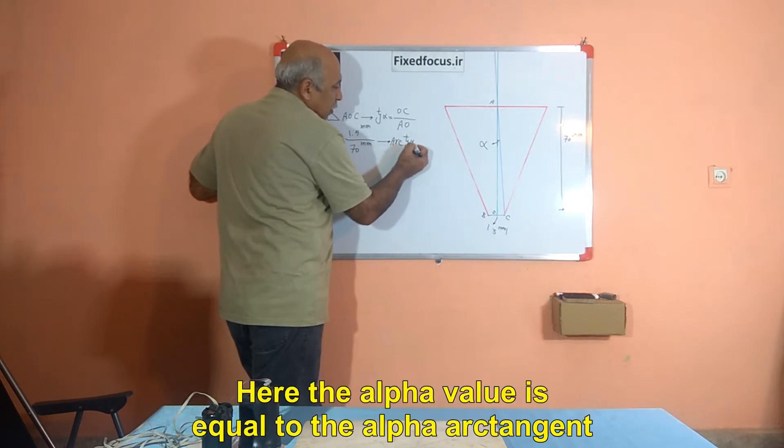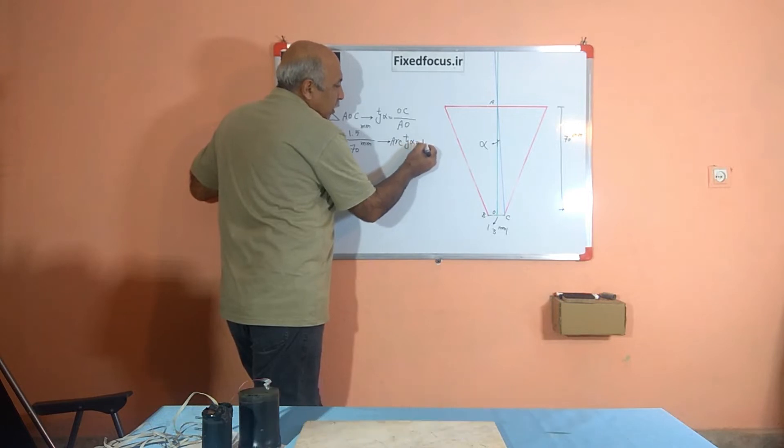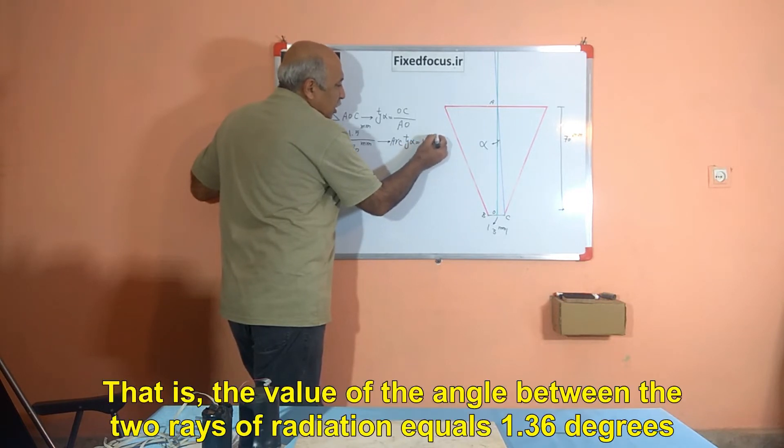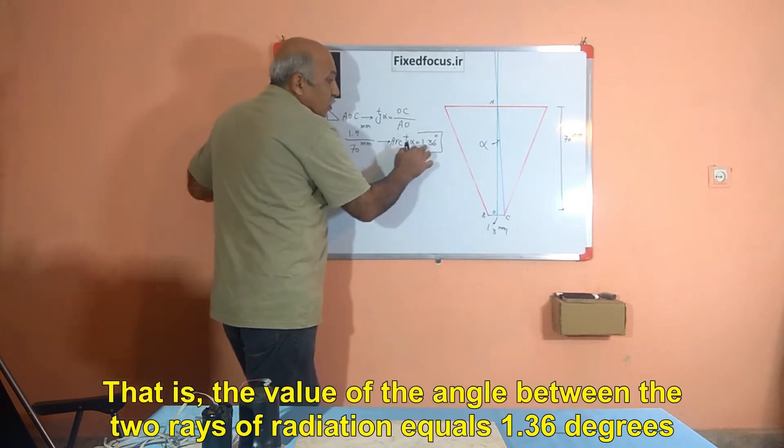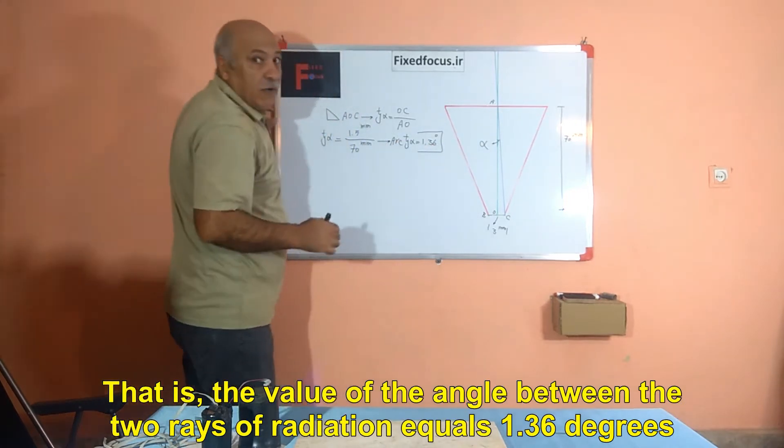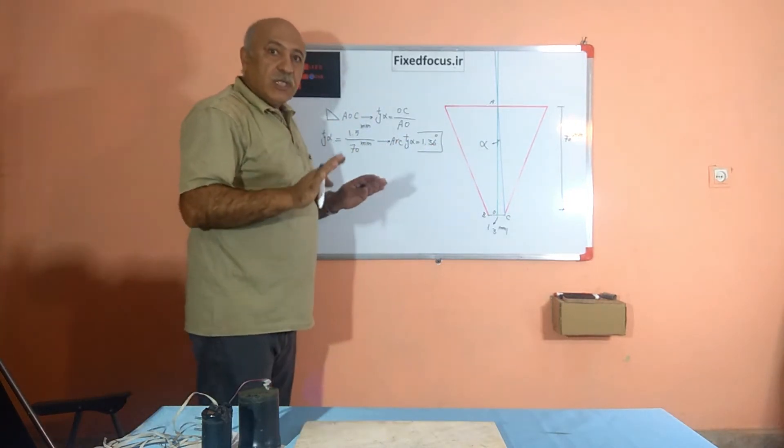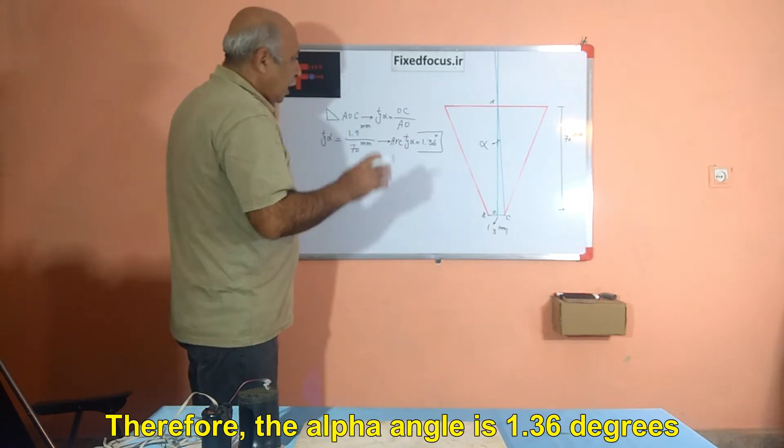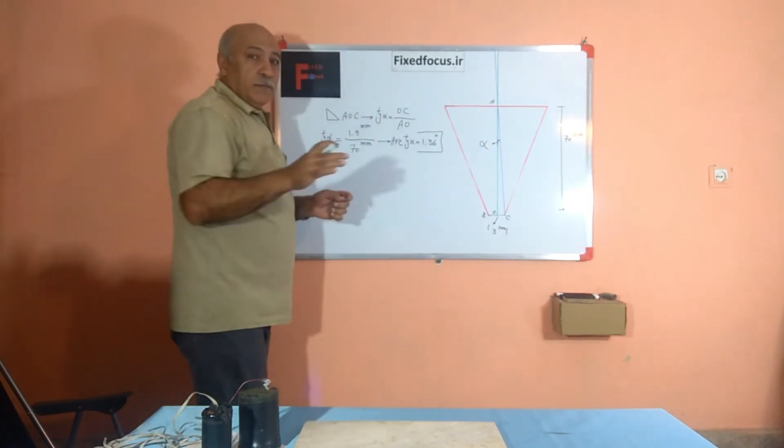Here the alpha value is equal to the alpha arc tangent. That is, the value of the angle between the two rays of radiation equals 1.36 degrees. Therefore, the alpha angle is 1.36 degrees.